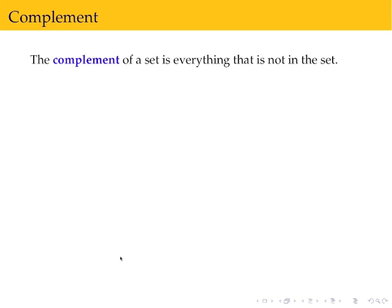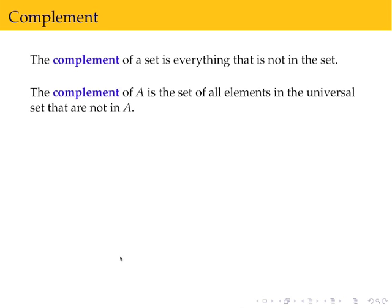Our next set operation is the complement. The complement of a set is everything that's not in the set. In order to talk about a complement, your universal set needs to be clear.